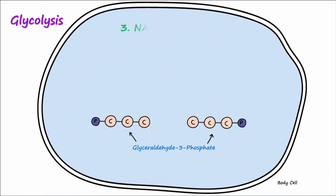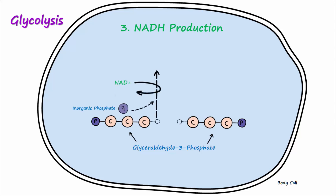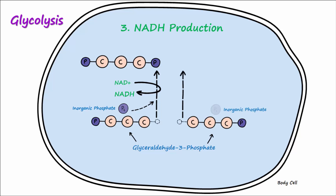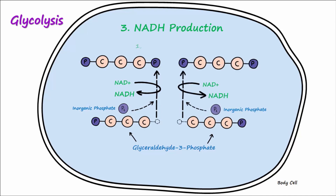In the third step, NADH production, each glyceraldehyde-3-phosphate molecule receives another phosphate group. As the phosphate group is added to each molecule, NAD+ gets reduced to NADH. The two new molecules formed are known as 1,3-bisphosphoglycerate.